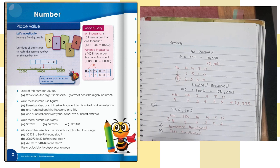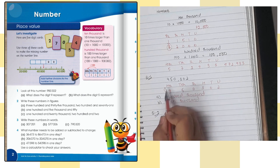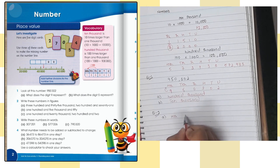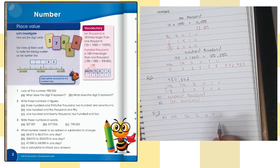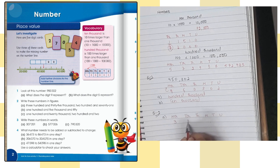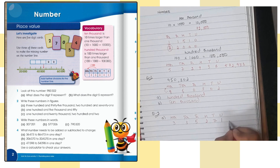Moving to question number two: write these numbers in figures. Solving part A: three hundred and thirty-five thousand, two hundred and seventy-one. First, write down the label — this makes it easy to solve. Three hundred goes in hundred thousands, thirty in ten thousands, five in thousands, two hundred in hundreds, seventy in tens, one in units. Cutting it short: three, three, five, two, seven, one — that is 335,271.